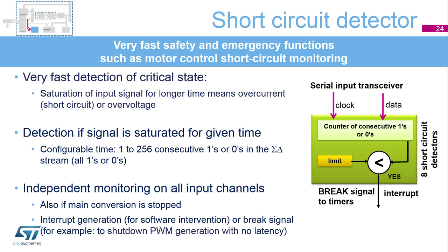The short circuit detector monitors input serial channels for saturation. When an input signal is saturated, it is outside the allowed measurement range and an overflow or underflow of the signal can be detected. This event can be used to detect overvoltage or overcurrent. Detection of input signal saturation is based on monitoring the serial data stream from the Sigma Delta modulator and watching if there is a consecutive series of ones or zeros for a relatively long time. This maximum saturated time can be set in a range from 1 to 256 samples with the same logical value, 0 or 1.